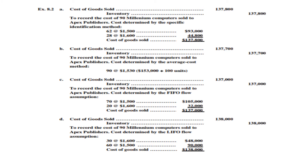For LIFO, we take the latest cost first. The latest purchase was 30 units at $1,600, and 60 units from the previous purchase at their respective cost. The total cost of goods sold under LIFO is $138,000. Comparing methods, LIFO will generally give you the highest cost of goods sold during rising prices.